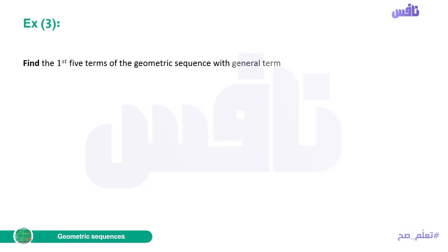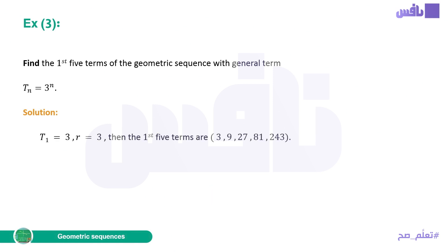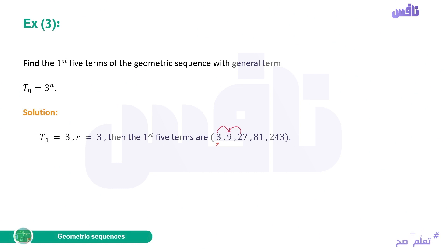Example 3: find the first five terms of the geometric sequence with general term Tn = 3^n. Either substitute n=1,2,3,4,5 directly, or use the first term T1 = 3^1 = 3 and multiply by R=3 each time: 3, 9, 27, 81, 243.